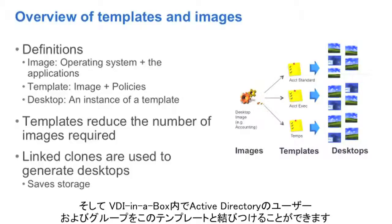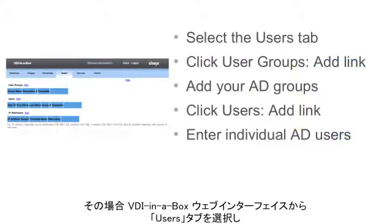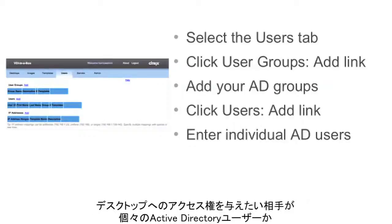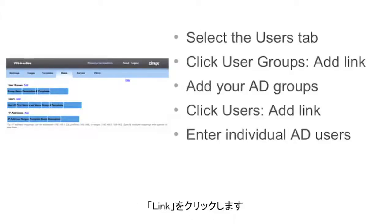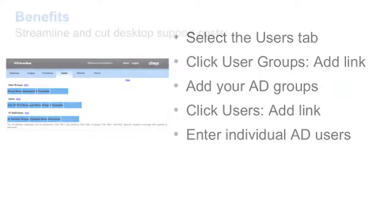Then we can associate our users and groups from Active Directory with the template in VDI in a Box. To do this, we will select the Users tab from the VDI in a Box web interface. From there, we will click the link that says Add next to User Groups or Users, depending on whether we want to grant desktop access to individual Active Directory users or larger groups of users.